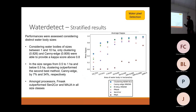Considering the performance assessed by distinct water body size, between 1 and 10 hectares only clustering and 10edge — another threshold — were able to provide a Kappa score above 0.8.